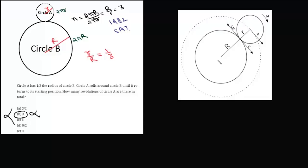We have two circles, circle B and circle A. This is the center of circle B and this is the center of circle A. This circle A rolls over B, or to be more precise, A rolls over B without slipping.